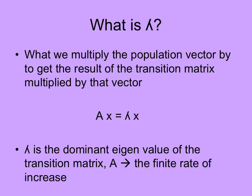This is where lambda comes from in linear algebra terms. Lambda — that matrix — is what we multiply the population vector by, showing the numbers or proportions of individuals in each age or stage class, to get the result of what things will be like in the next time interval.